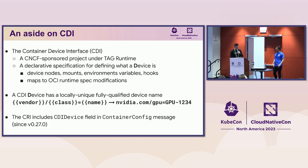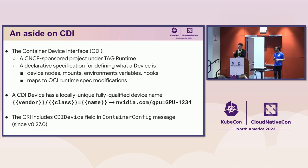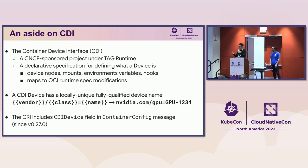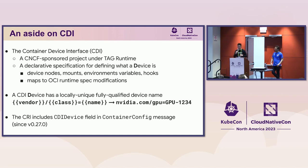CDI, or Container Device Interface, is a CNCF-sponsored project under TAG Runtime. It provides a way for vendors to declaratively specify what a device means — including device nodes, mounts, environment variables, and hooks — trying to be for devices what the OCI runtime spec is for containers. These modifications map to OCI runtime spec modifications, giving you access to your device. Devices can be referred to by a locally unique name or a fully qualified CDI device name, which includes a vendor component, a class component, and a name. The CRI was also extended to include support for CDI device fields in the 0.27 release.